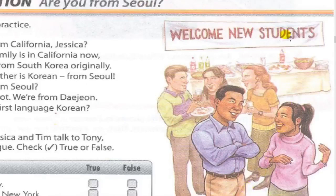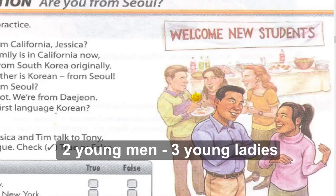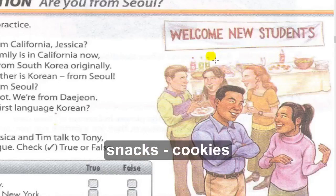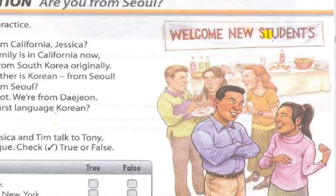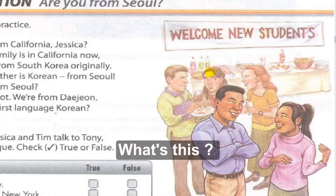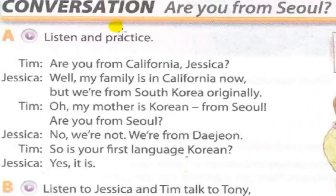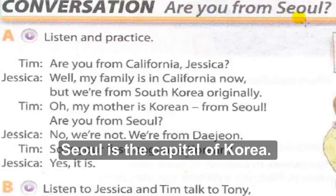Exercise 2. Look at the picture — what do you see? Two young men, three young ladies, drinks, soda, snacks, cookies. It says 'Welcome New Students' — so this is a welcome party for new students. Conversation: Are you from Seoul? Seoul is the capital of Korea.